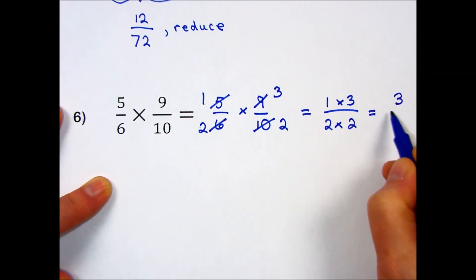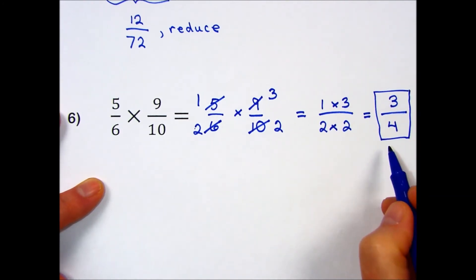And finish by performing the multiplications. 1 times 3 is 3. 2 times 2 is 4. My final answer is 3 fourths. And it's already in reduced form.